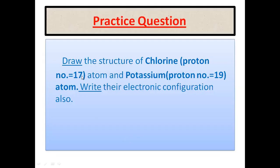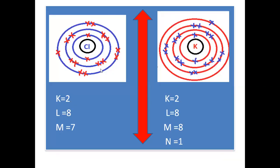You can draw the structure of the chlorine atom (proton number 17) and the potassium atom (proton number 19), and write their electronic configurations. For chlorine: K equals 2, the second shell takes 8 electrons, and the third shell (M shell) takes 7 electrons. For potassium: K equals 2, the second shell (L shell) has 8 electrons, the third shell (M shell) has 8 electrons, and the fourth shell has 1 electron. This is the electronic configuration for chlorine and potassium atoms.